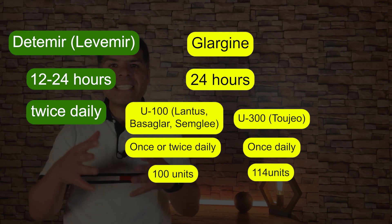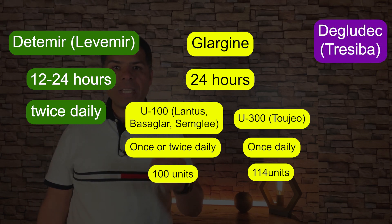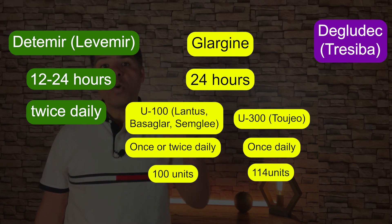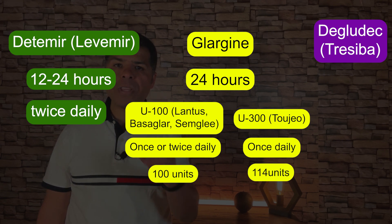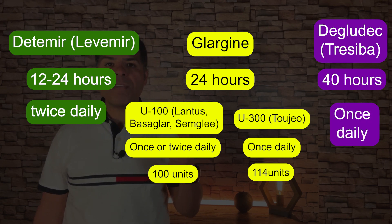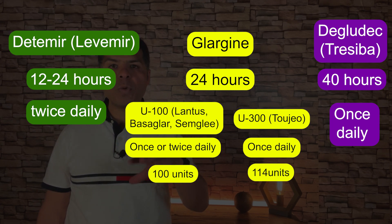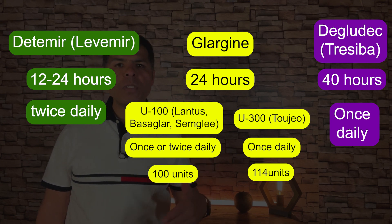Insulin degludec (brand name Tresiba) has the longest duration of action among all FDA-approved long-acting insulin analogues — almost more than 40 hours — and is given once daily. It is available in U100 and U200; the conversion between U200 and U100 is one-to-one. The U200 formulation is mainly used for those with high insulin requirements.